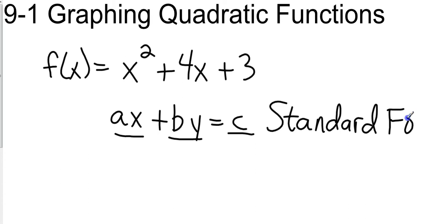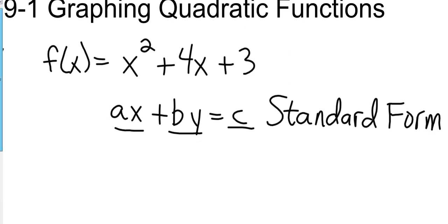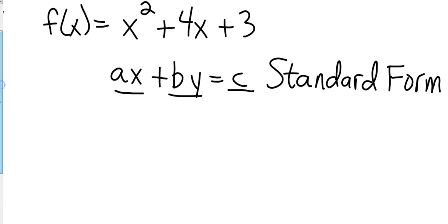The reason we do this is because we're going to be graphing this and it's going to look like a U almost and it's going to turn at some point and then make a mirror image of itself. To find out where it turns or where the mirror image is, I'm going to find what's called the axis of symmetry.